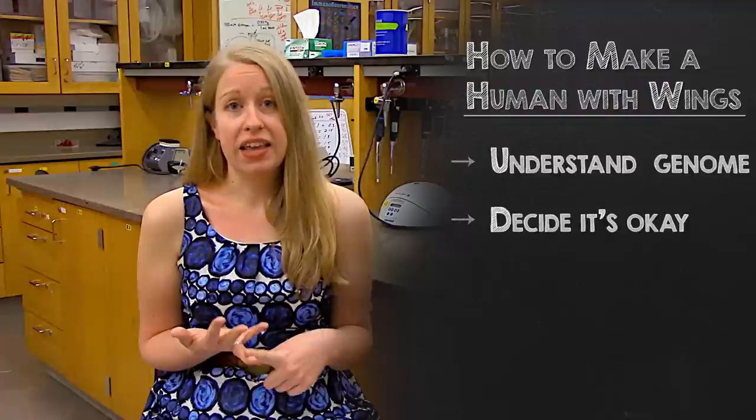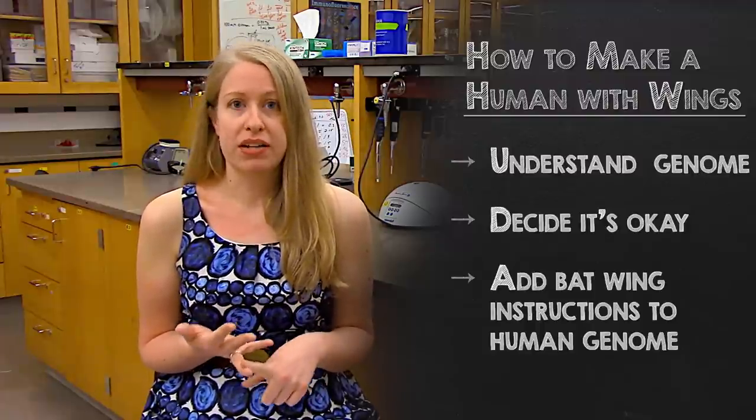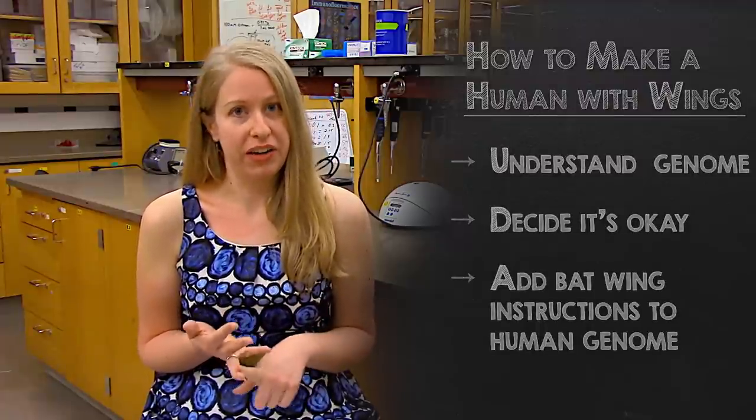And then we need to take the part of the bat genome that encodes for wings and put it into the genome of a very early unborn baby and allow that baby to grow and develop into a human with wings.